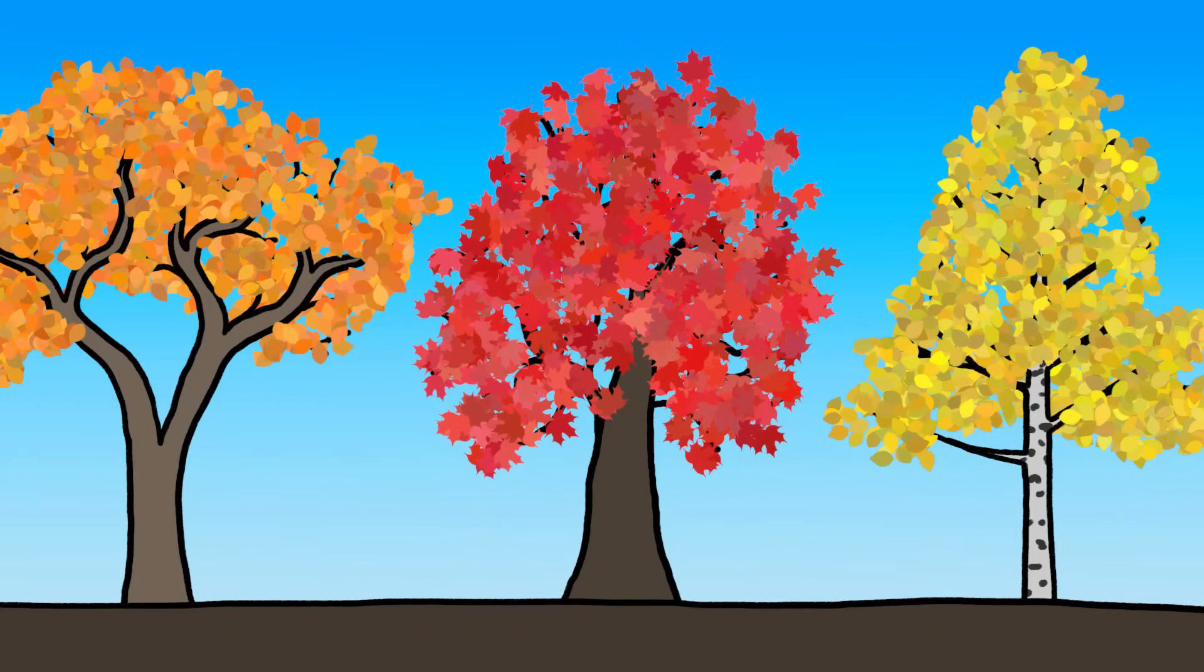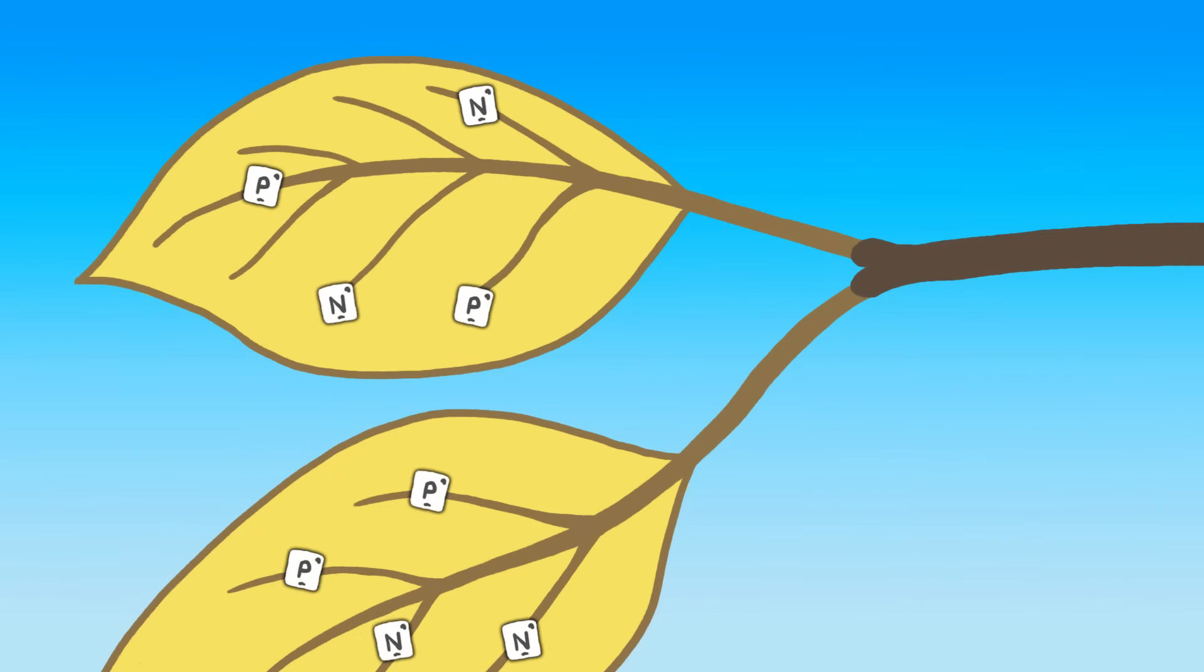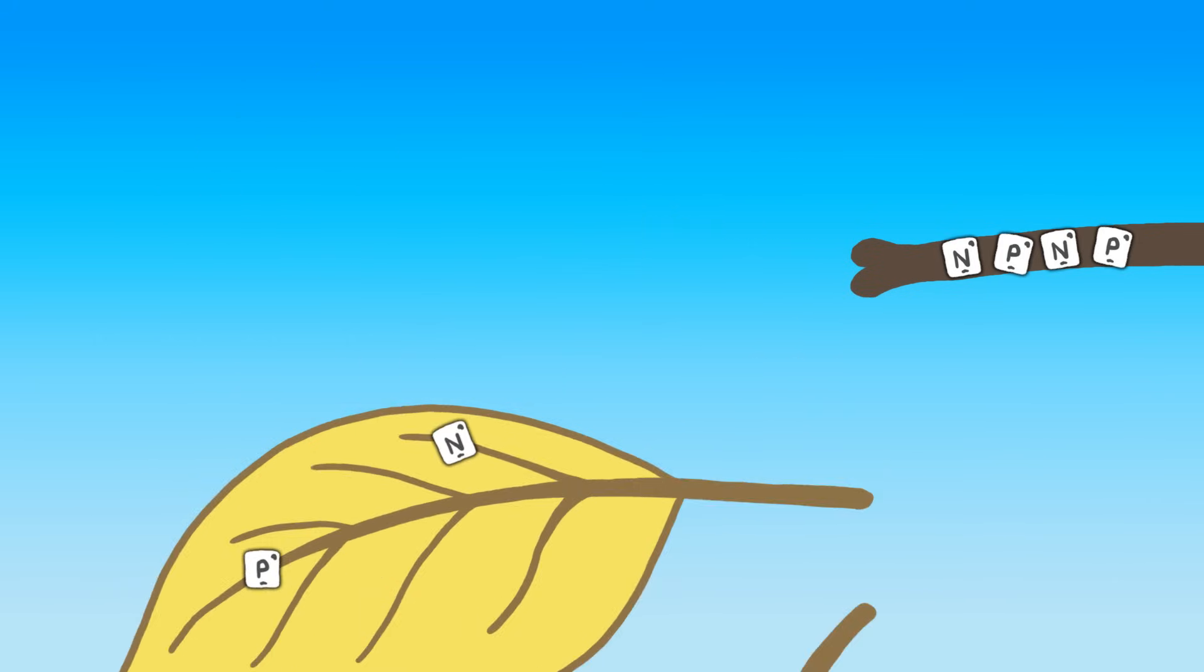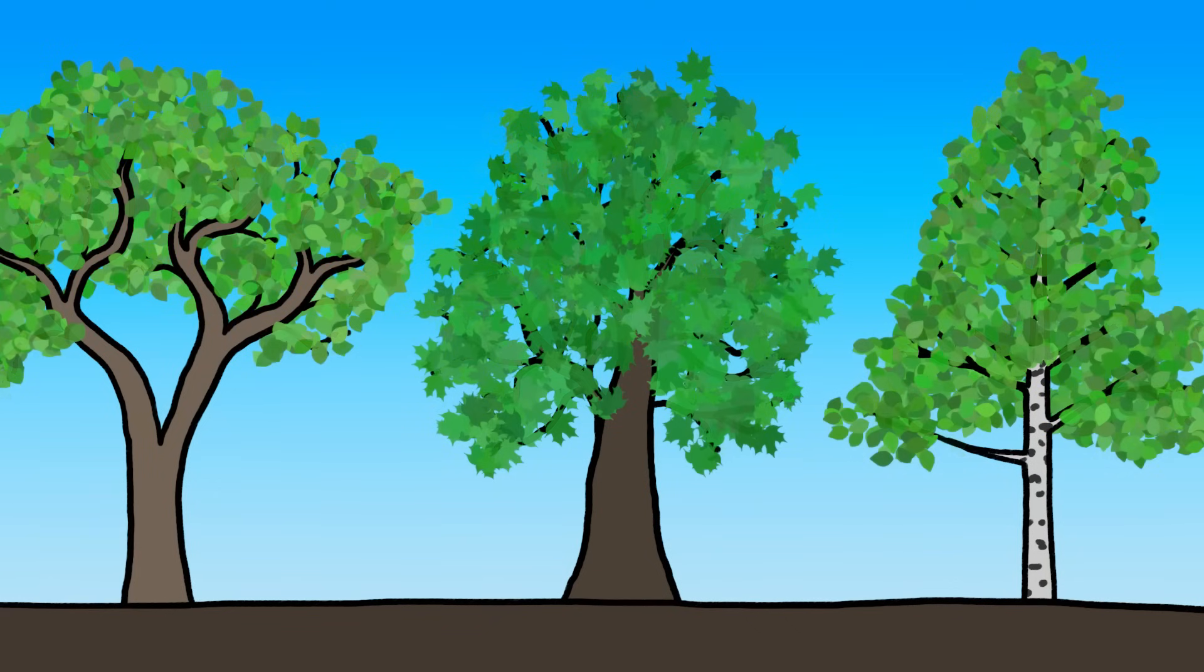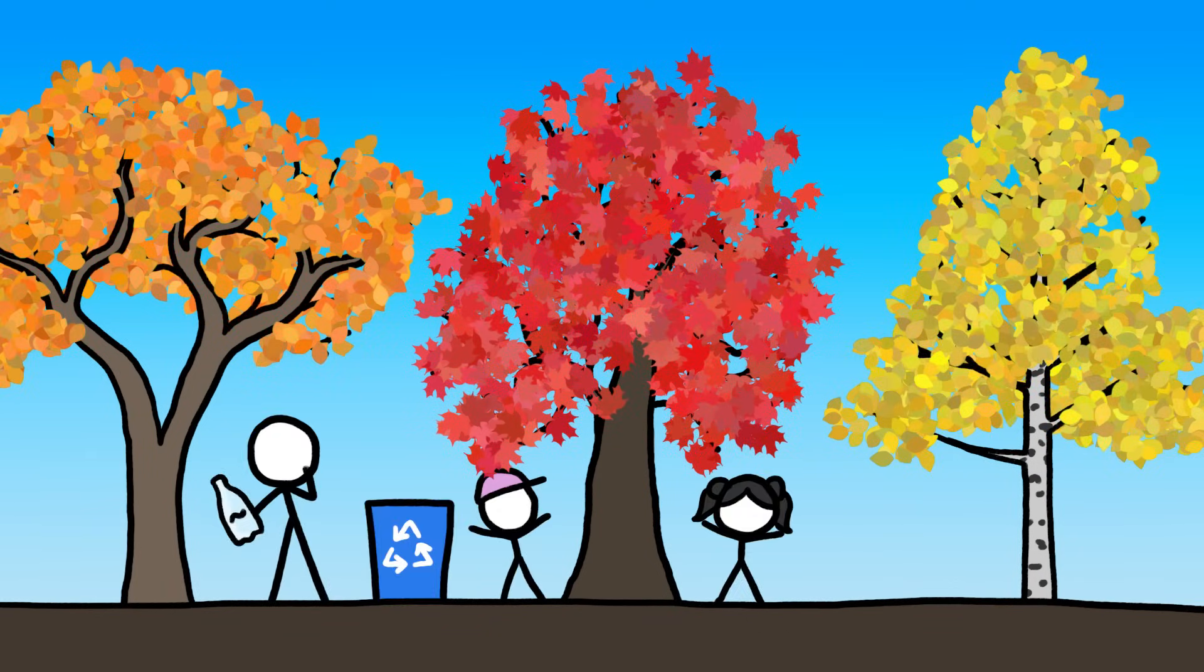In the end, these exquisite gold and russet displays help deciduous trees recover as much as 50% of the nitrogen and phosphorus from their old leaves to help grow fresh new green ones in the spring. They are perhaps the world's prettiest recycling plants.